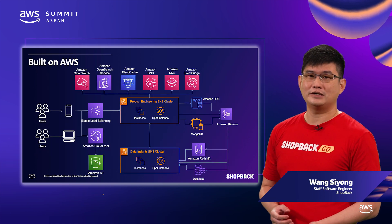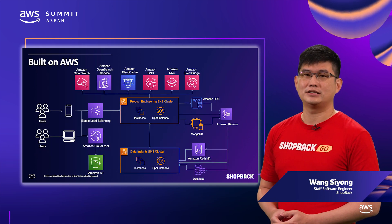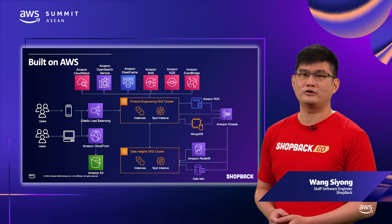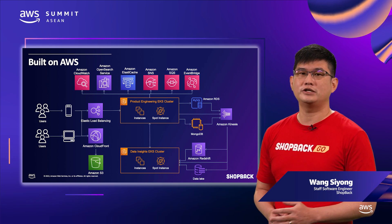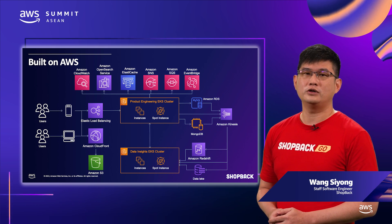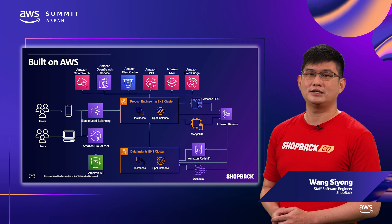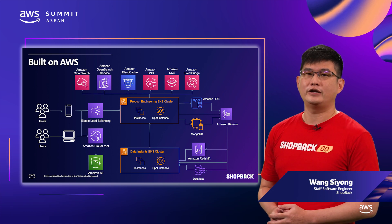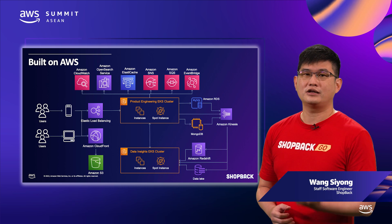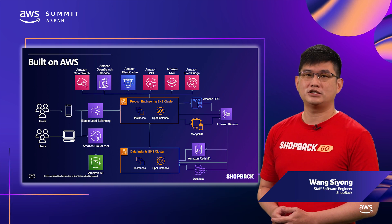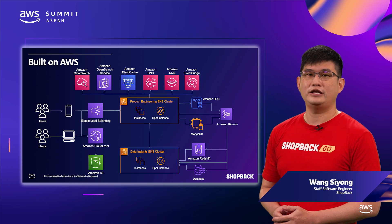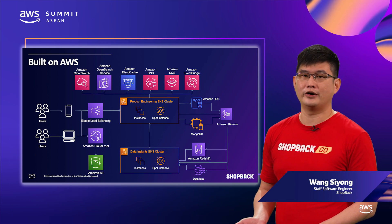ShopBack's backend systems are built on top of AWS. Traffic from our mobile apps and website across our 10 countries goes into country-specific EKS clusters. Our compute workloads run on Kubernetes, and we rely heavily on AWS infrastructure such as CloudWatch, OpenSearch, ElastiCache, SNS, SQS, EventBridge, RDS, and many more.